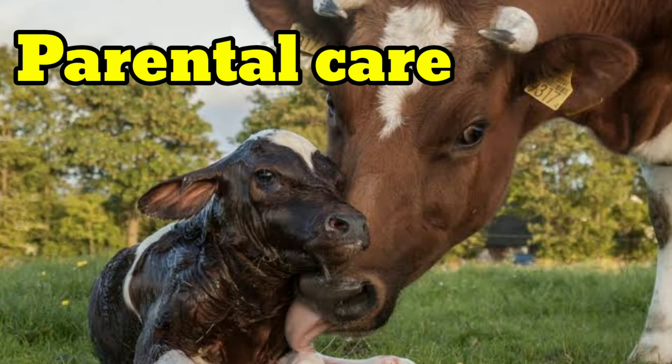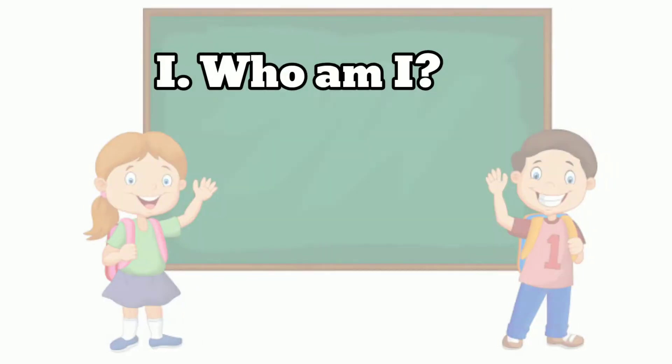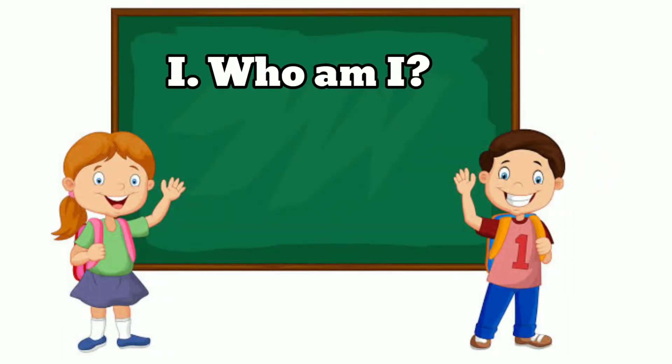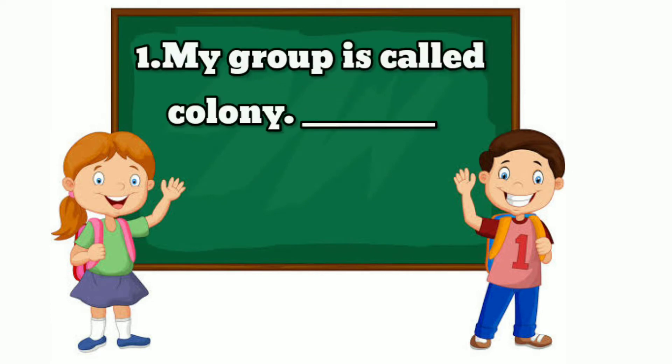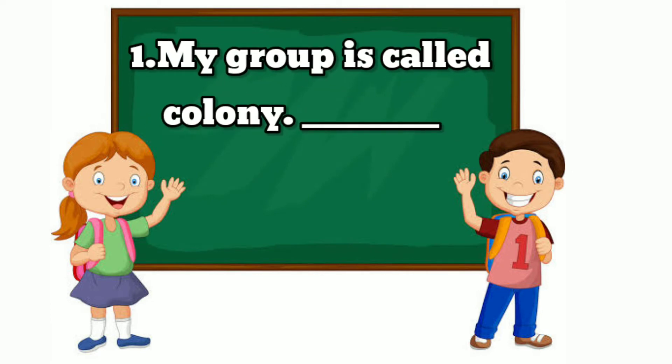Children, you just remember that. First, we see Roman number one — 'Who am I?' Nan yad. First one: my group is called colony.